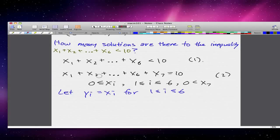What we're going to do is we're going to do some let statements to make it such that we have the following: we let yi equal to xi for 1 less than or equal to i less than or equal to 6. So for x1, x2, all the way to x6, it will also equal to y1, y2, all the way to y6. And for y7, it will have to be x7 minus 1.